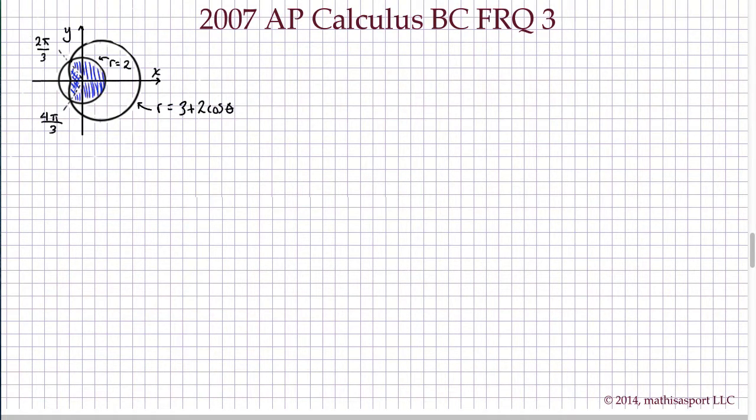In this problem we're working with polar curves: a simple one, r equals 2, and then a more complicated one, r equals 3 plus 2 cos theta. It's really that second one that we're going to work on for most of the problem.